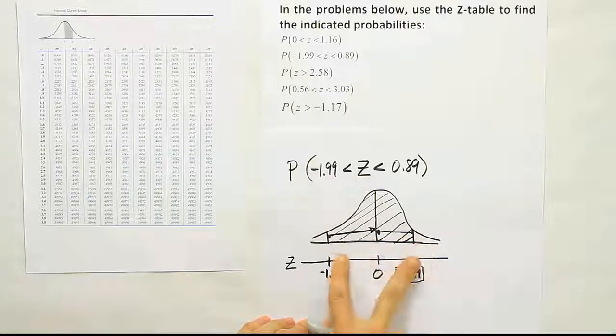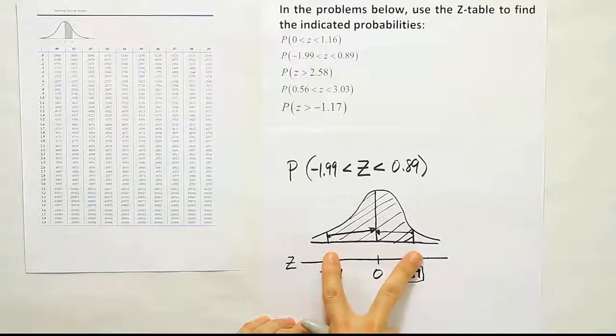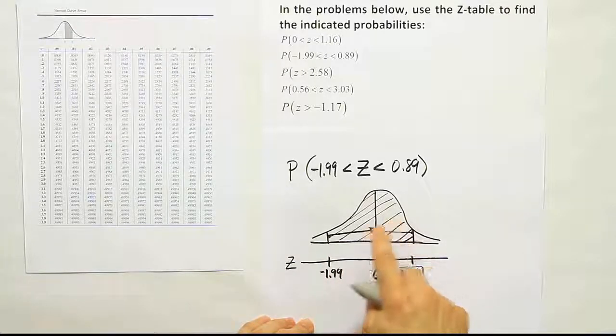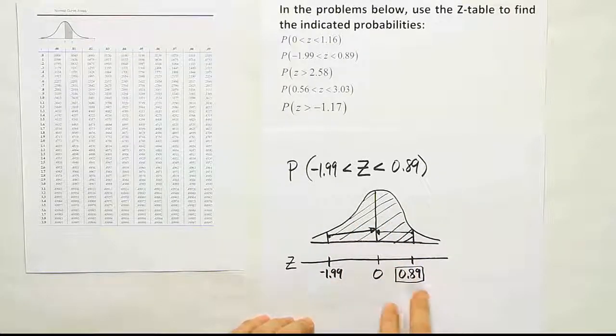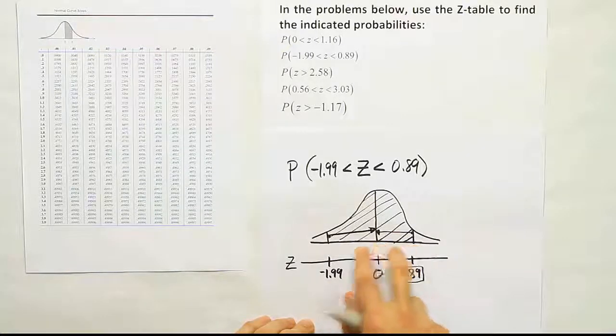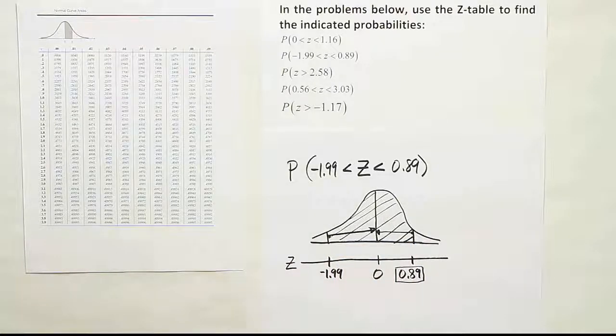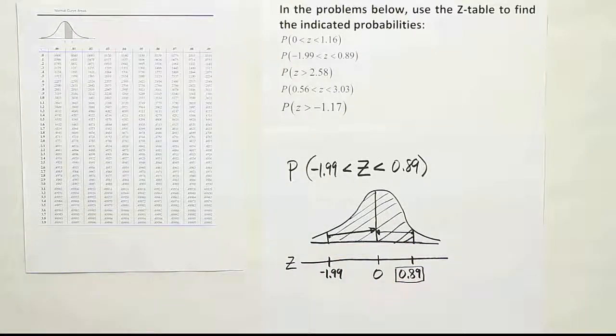Those two separate results you can see by this visual aid that they need to be added together so that the total area is going to be the sum of this part and this part. So our final result is going to basically be the addition of this area plus this area because that comprises the total shaded area. Alright, so let's go to the table and start looking these z score values up.